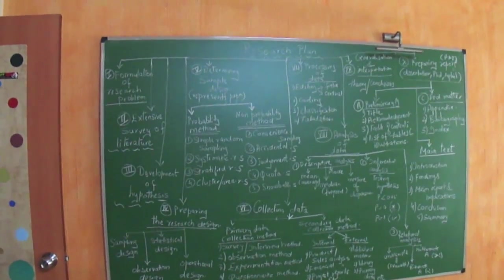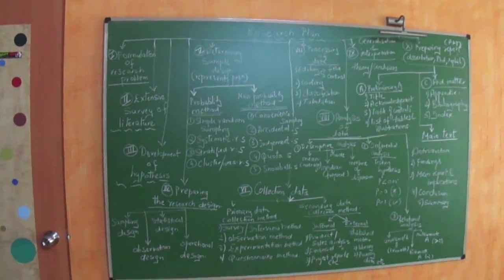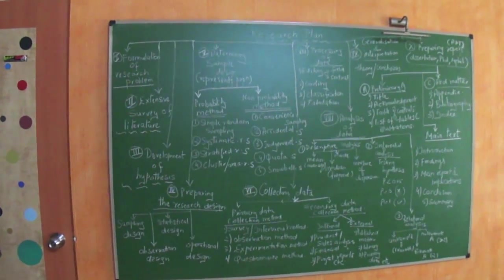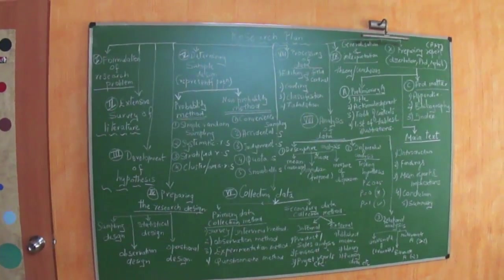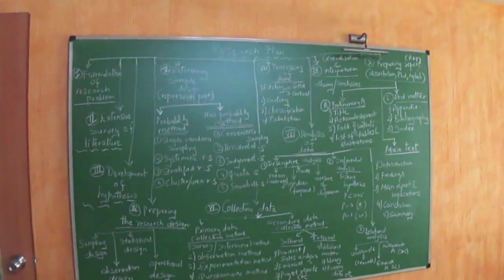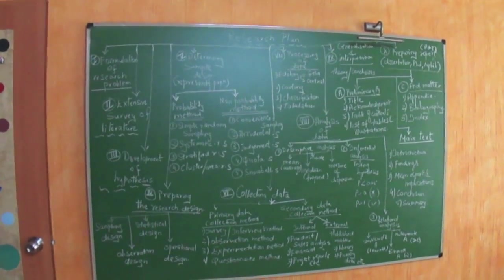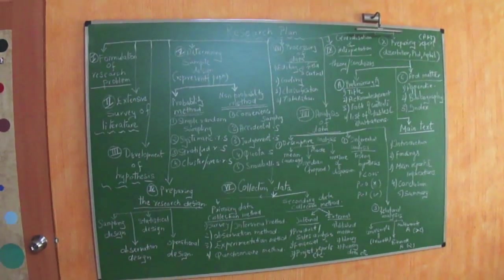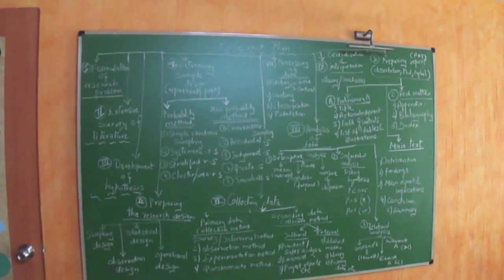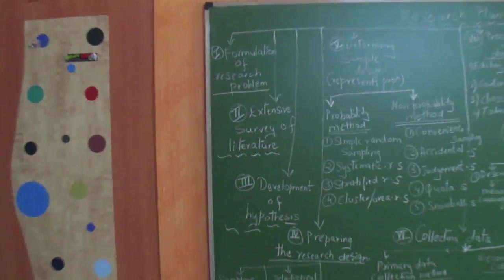When we want to do a research for any purpose, you have to have this research plan in mind. Basically it has about 10 points to be taken into consideration. Let's see this one by one. Let me zoom in to the first point.